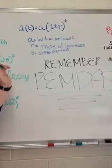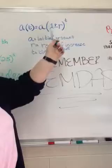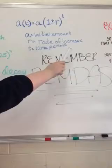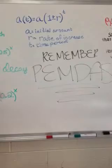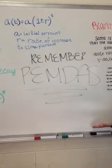So for our rate of change function, it is a to the t power equals a times 1 plus or minus r to the t power. A equals initial amount, r equals rate of increase, and t equals time period. Does our rate always have to be a rate of increase? No, it can also be a rate of decrease, but in our example problem, it is a rate of increase.